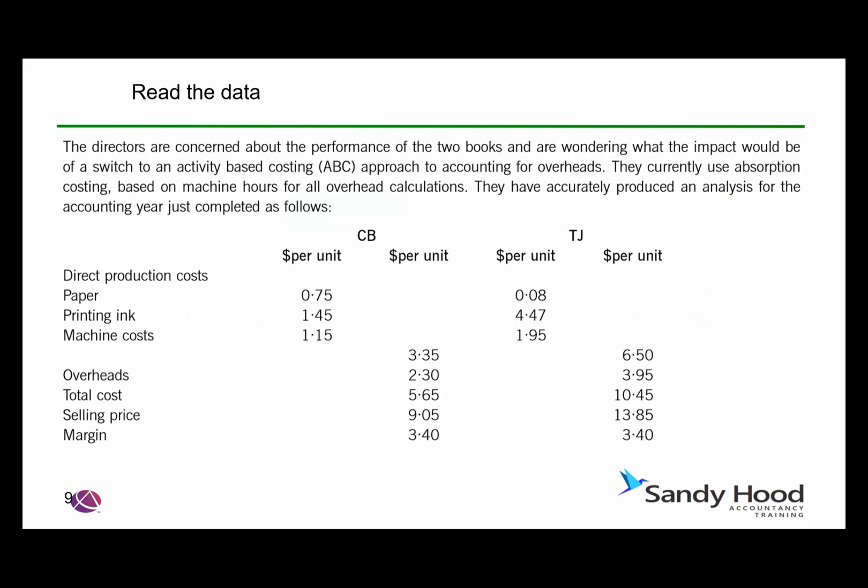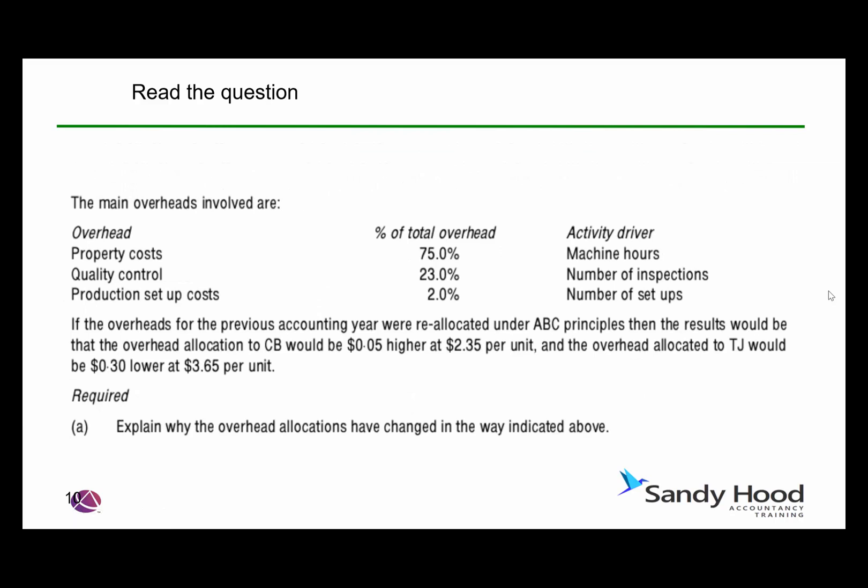Here's the data. You can see that the two products have exactly the same margin — one selling for $9.05 and the other for $13.85 — and we can see the respective costs. Overheads are $2.30 for the CB and $3.95 for the TJ. We're also given a useful breakdown of overheads as a percentage of total overhead along with the activity drivers. The overhead allocation for CB would be $0.05 higher at $2.35, whereas the overhead allocated to TJ would be $0.30 lower at $3.65.